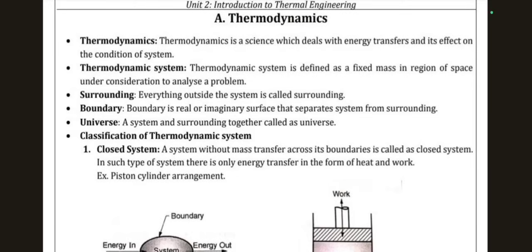A thermodynamic system is defined as a fixed mass or region of space under consideration to analyze a problem. Surrounding is everything outside the system. Boundary is the real or imaginary surface that separates the system from its surroundings — a tangible or intangible layer between system and surrounding. Universe refers to the system and surrounding together.